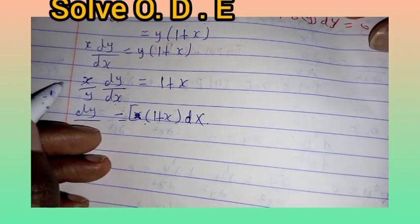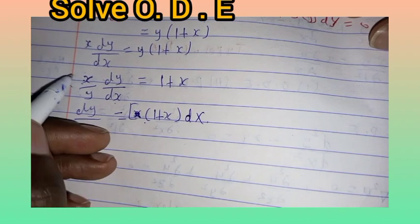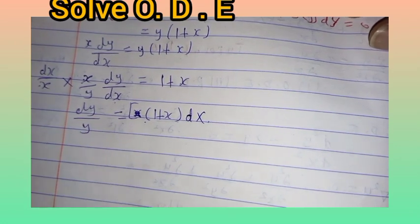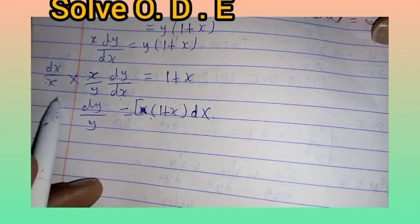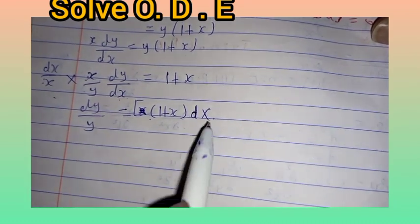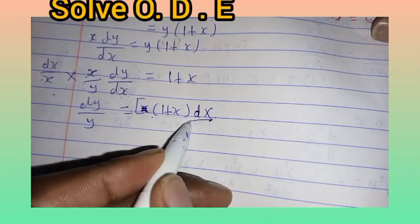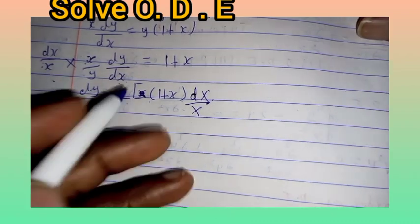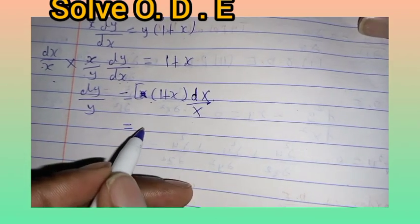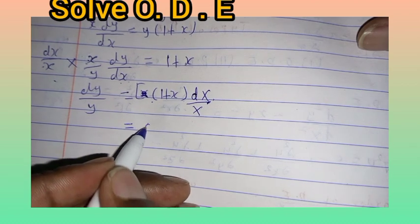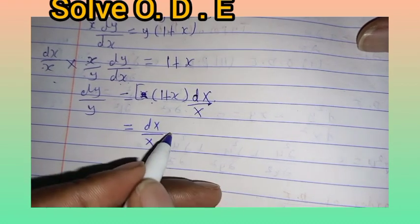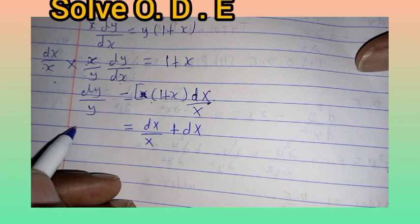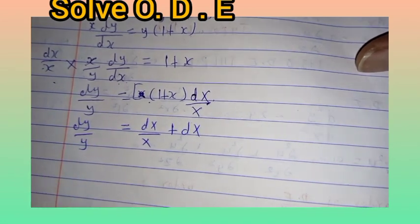Multiplying by dx over x: on the right side, x cancels, and we are left with dy over y equals dx over x plus dx. So the separated form is dy/y = dx/x + dx.